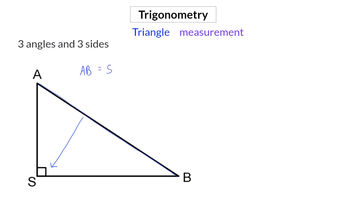We can call this small s. Side SB is right across from angle A and can therefore also be lowercase a. And side AS is right across angle B, so this is lowercase b.